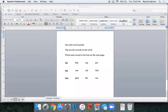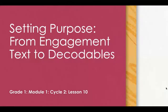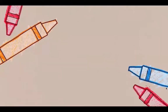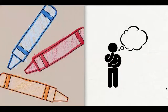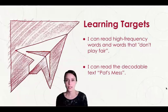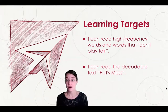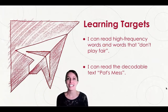Welcome to today's lesson. Today we are going to be setting purpose, moving from our engagement text to our decodable, Pat's Mess. For today, you won't need any additional materials — you will just need your thinking caps. Here we go. We have two learning targets today: I can read high frequency words and words that don't play fair, and I can read the decodable text, Pat's Mess.